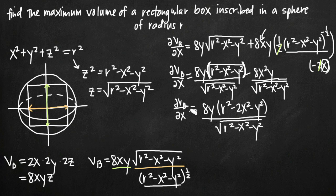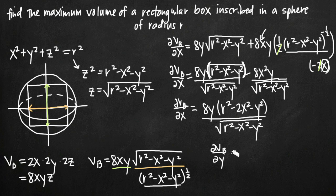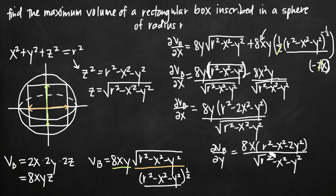For the partial derivative with respect to y, we follow the exact same process using product rule and chain rule. The result is ∂V/∂y = 8x(r² − x² − 2y²) / √(r² − x² − y²).